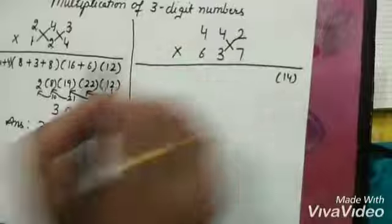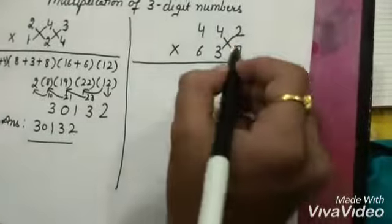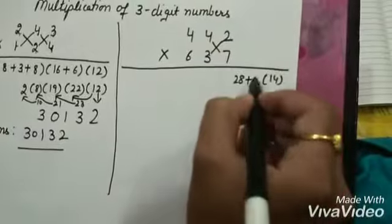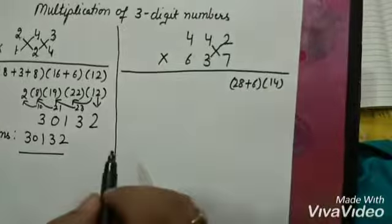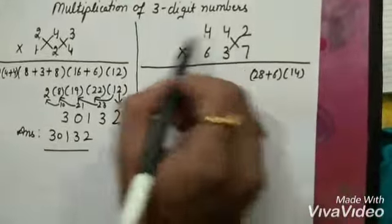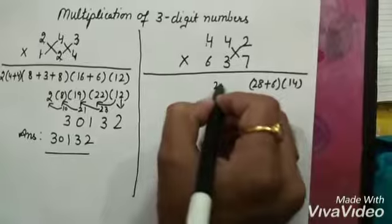When we are going to make this cross, what do we get? 7 times 4 is 28. 3 times 2 is 6. Then this 4 and this 7, 4 times 7 is 28.